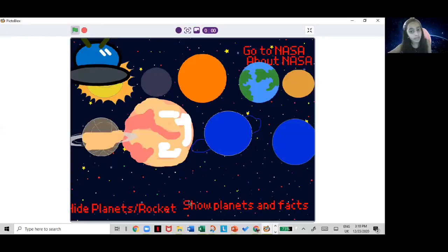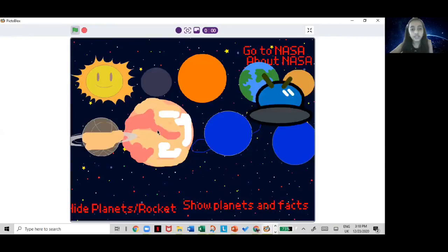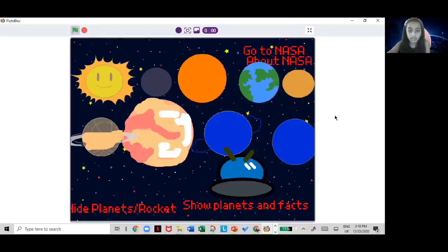I am going to click show planets and facts. If I click the up arrow key, I can move the rocket wherever I want. If I click the space key, it can stop the moving of the rocket to click on the planet.